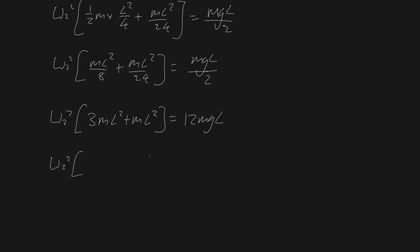And simplify that more. That's ω2² times... Oh, that's nice. It's going to be 4mL² = 12mgL. And I'll just write it over here for effect. That means ω2² = 12mgL/(4mL²).